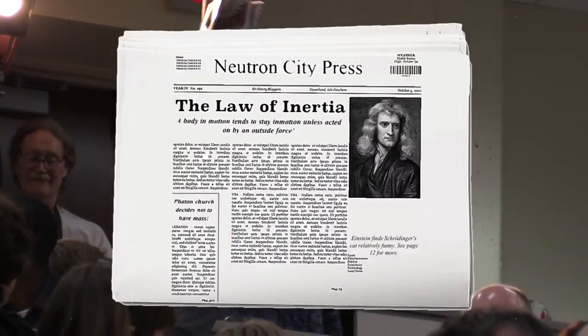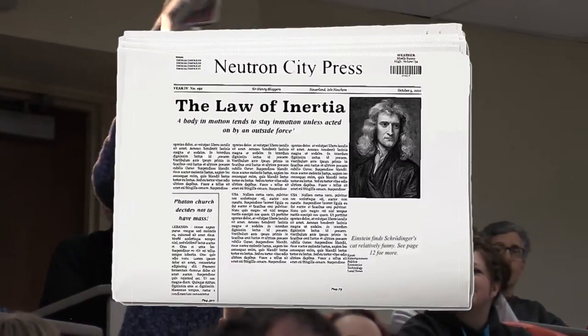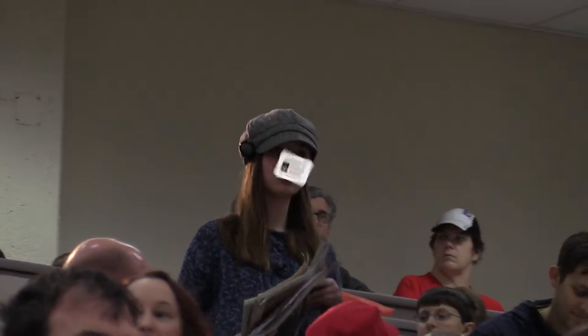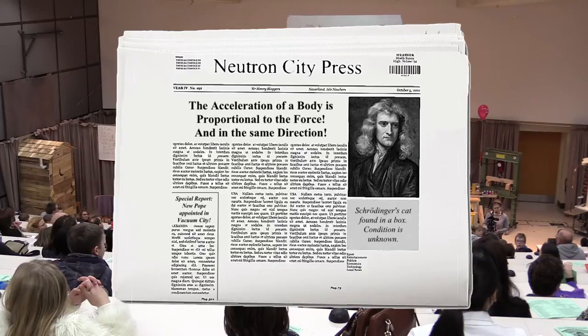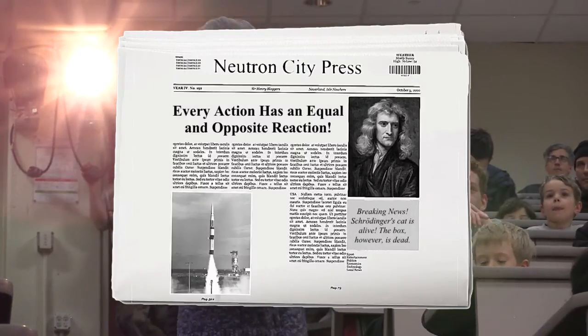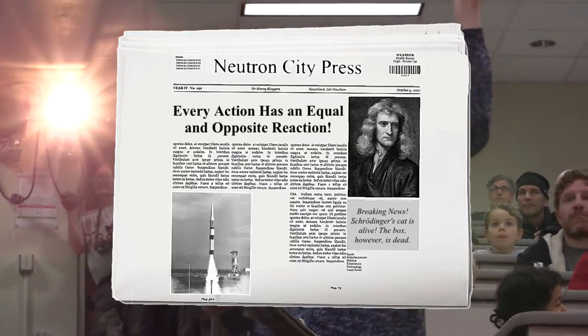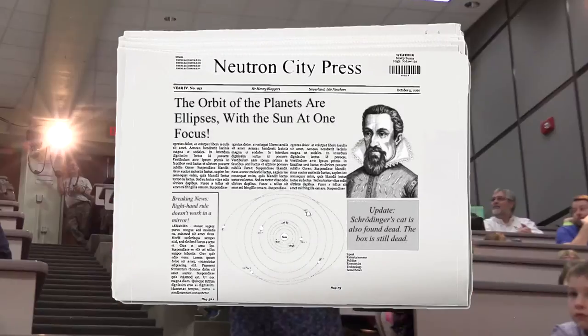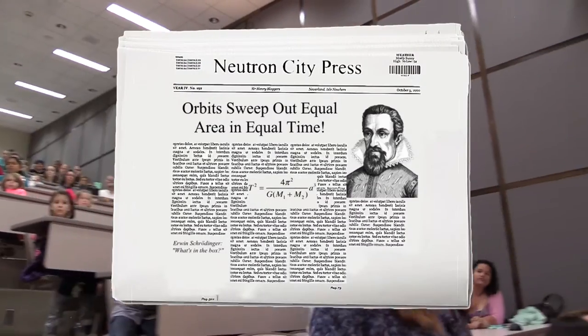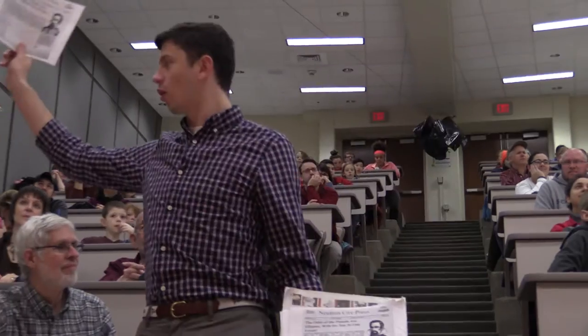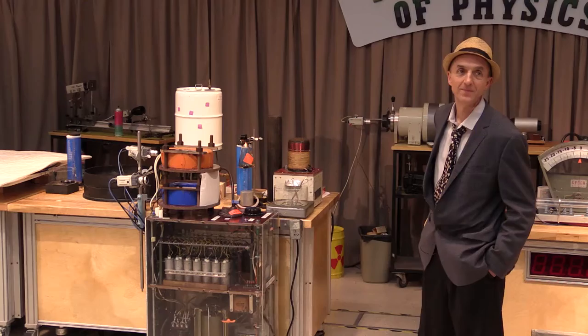Extra, extra, read all about it! A body in motion tends to stay motionless unless acted on by an outside force. The acceleration of a body is proportional to the force and in the same direction. Every action has an equal and opposite reaction. The orbits of planets are ellipses with the sun at one focus. Orbit sweeps out equal area in equal time. The square of the orbital period is proportional to the cube of the semi-major axis.